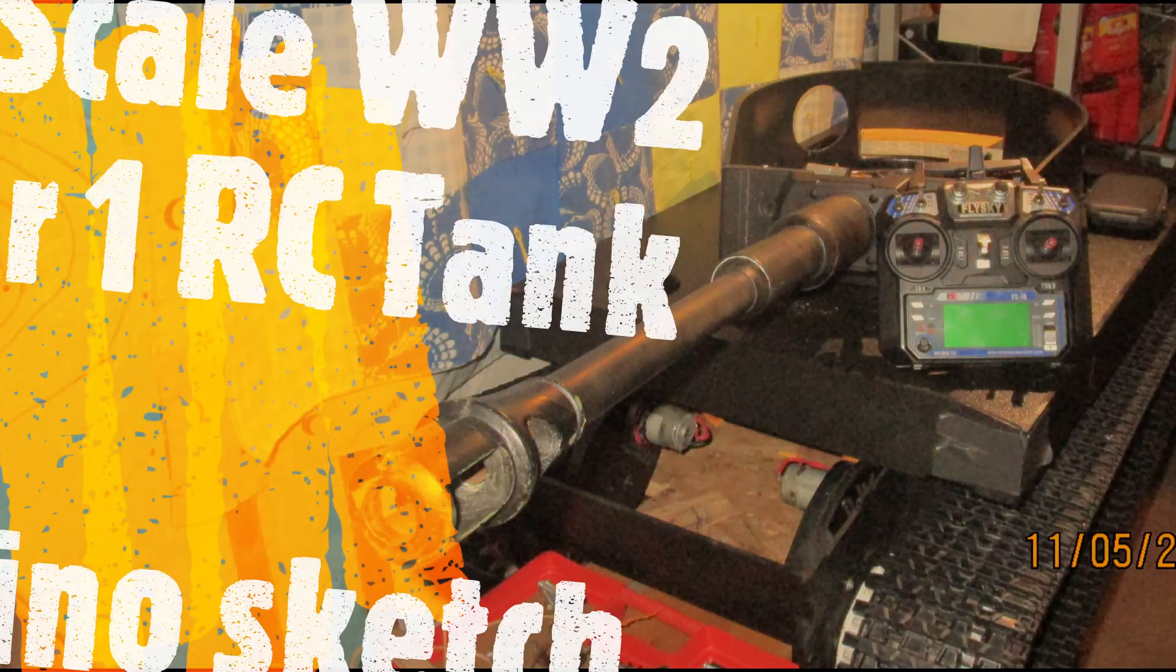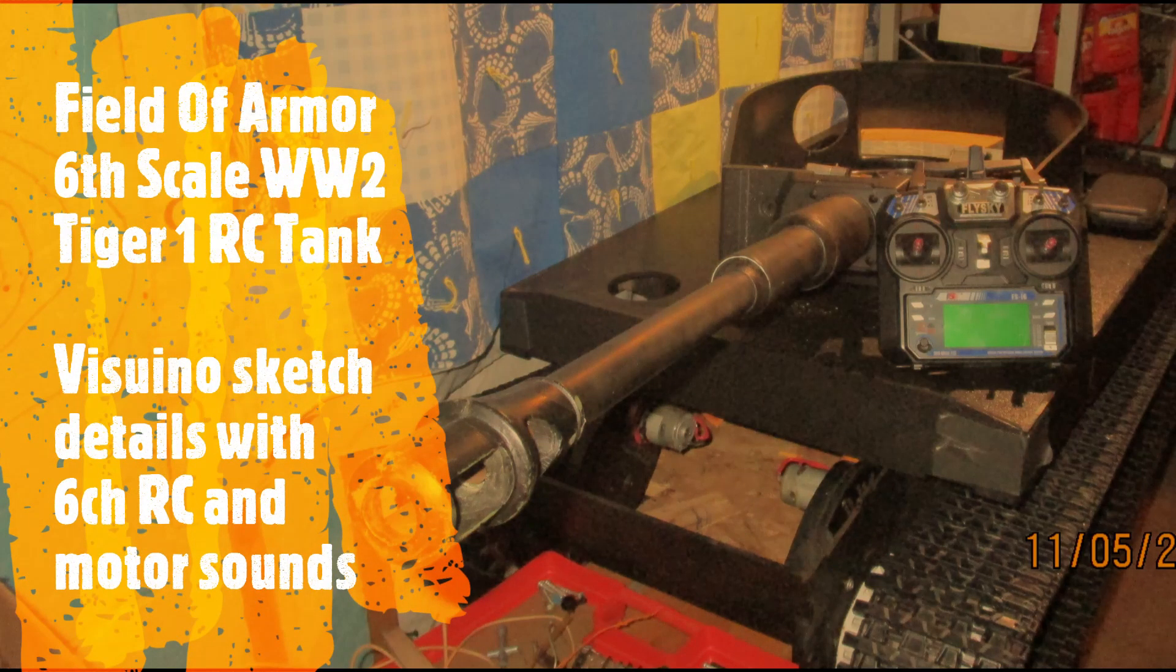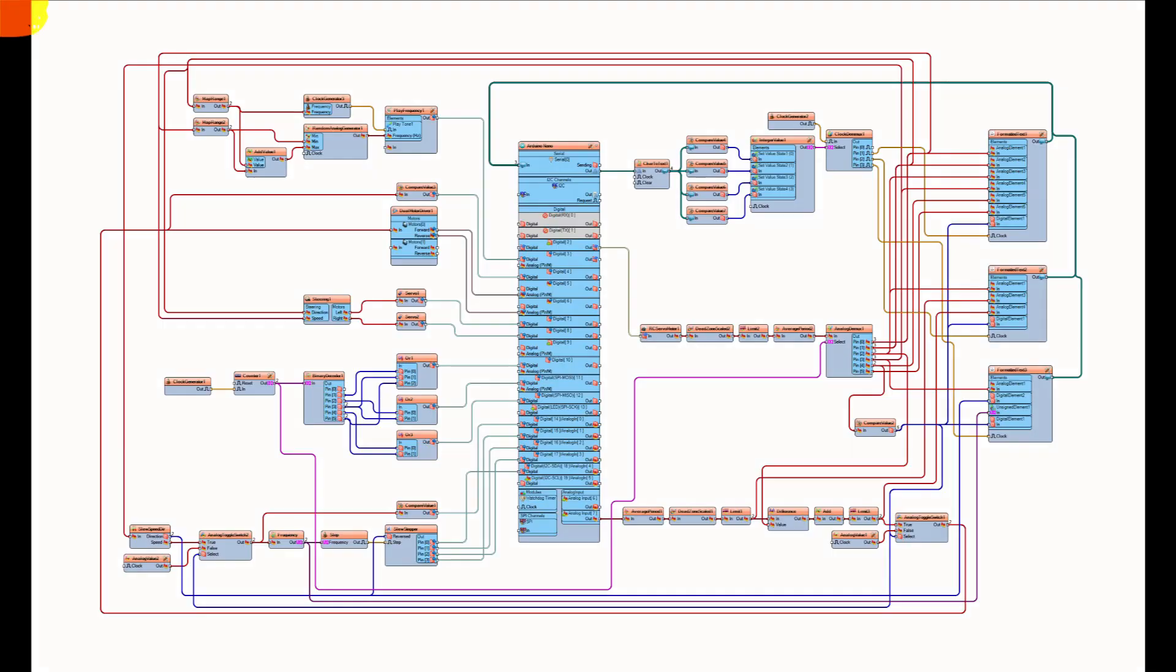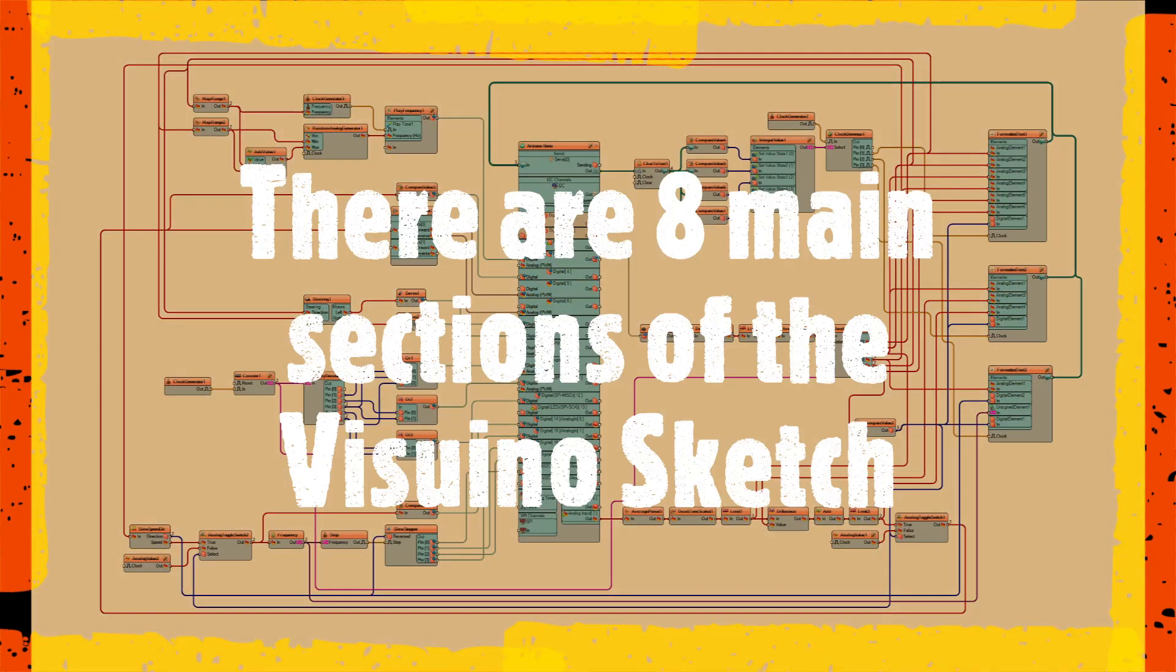This is the Field of Armor 6 scale World War II Tiger I RC tank. This is the Visuino sketch details with the 6 channel RC and motor sounds. There's a lot going on in the sketch and it's basically broken down into 8 separate sections.